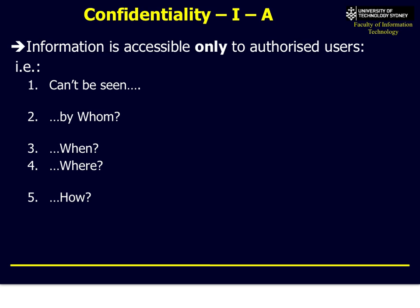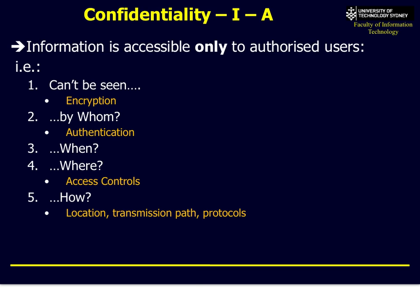The first concept is confidentiality — keeping information accessible only to authorised users. We need to check: can it be seen, by whom, when, where, and how? We need to encrypt information so it cannot be read without decryption ability. We check authentication — make sure people log in, find out who they are, what they can access. We check when they can access it: online, at UTS, offline, from home. What access controls do we have? Do only staff access your public website? And how is it transmitted — HTTP, HTTPS, or email?